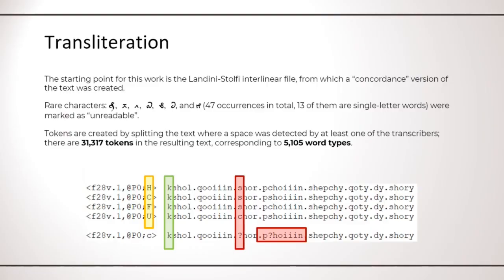The transliteration I use for this work is a concordance version that has been created from the Landini-Stolfi interlinear file. As an example, you can see here a line of text that has been transcribed by four different authors in yellow. You can see in the concordance version on the bottom, when there is a disagreement, I mark corresponding character and the corresponding words as unreadable, as you see in the red boxes.